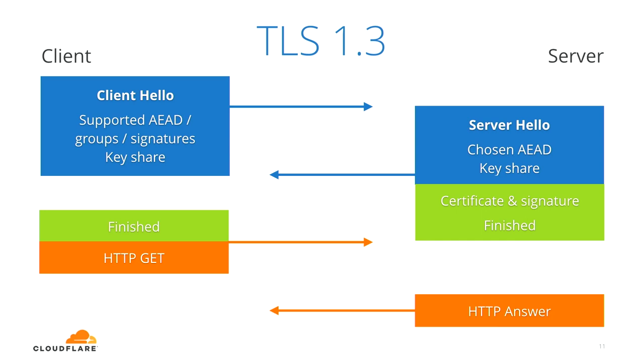If the prediction is correct, the server says it likes the key share and sends its own key share to run the same algorithm. It immediately mixes the two key shares to get a shared key, sends the certificate and signature, then sends a finished message right away because it doesn't need anything else from the client. The client takes the key share, mixes the shared key, sends its own finished message, and is ready to send application layer data — for example, your HTTP request.